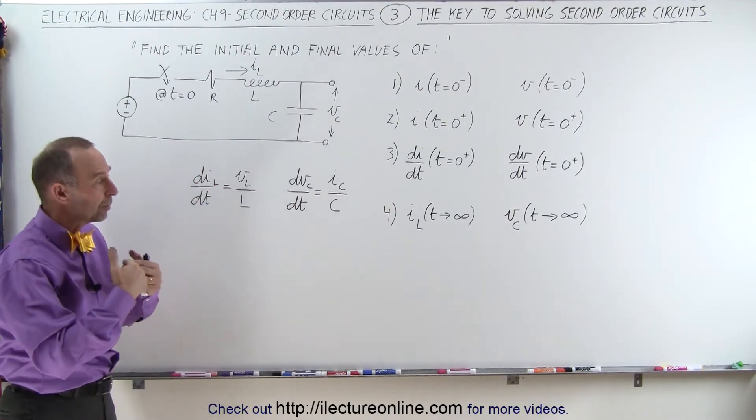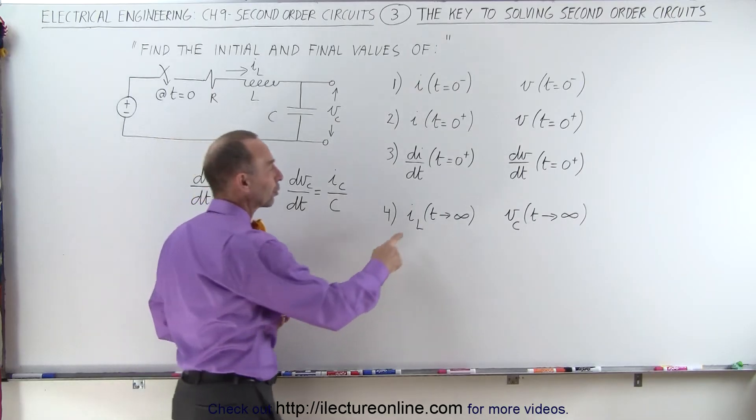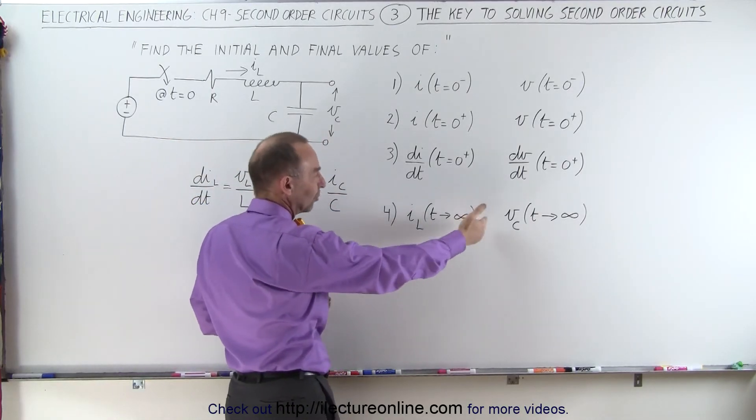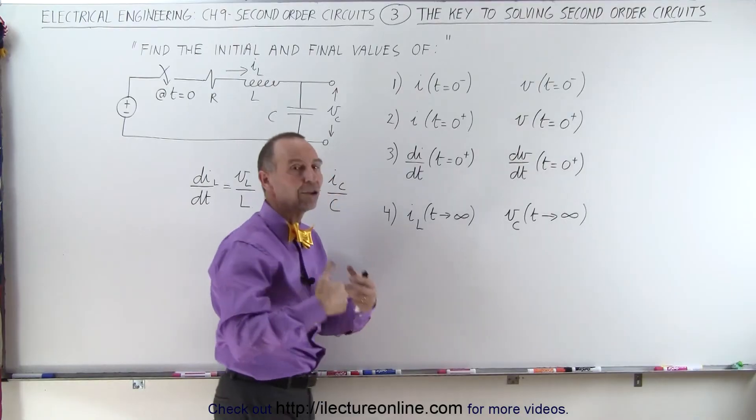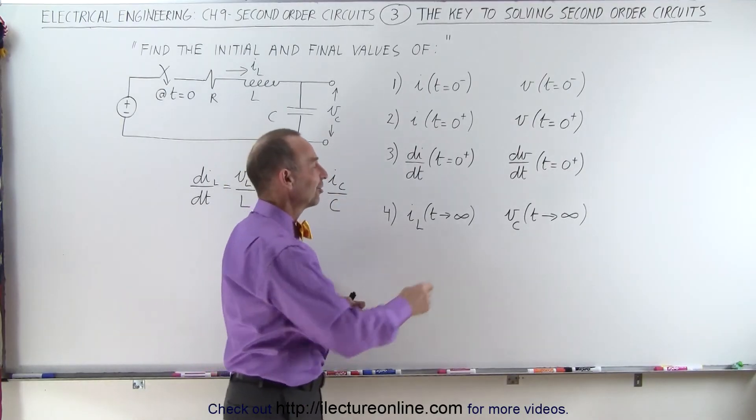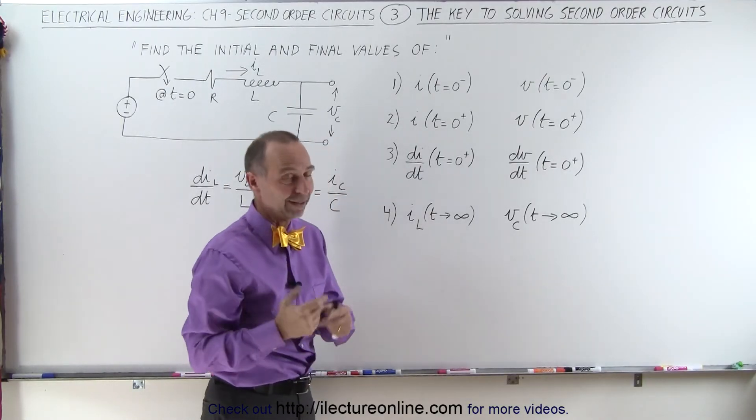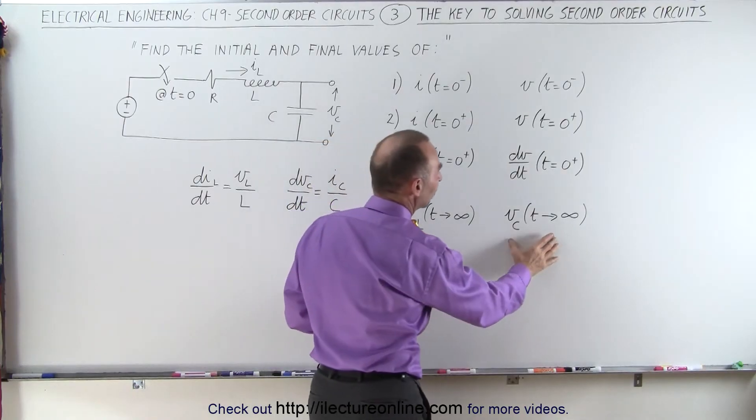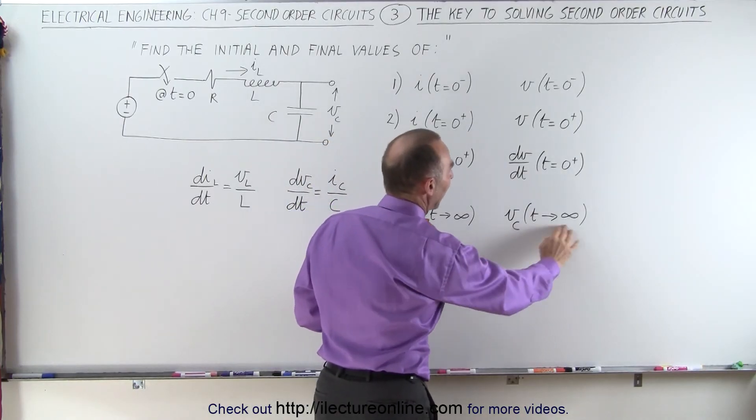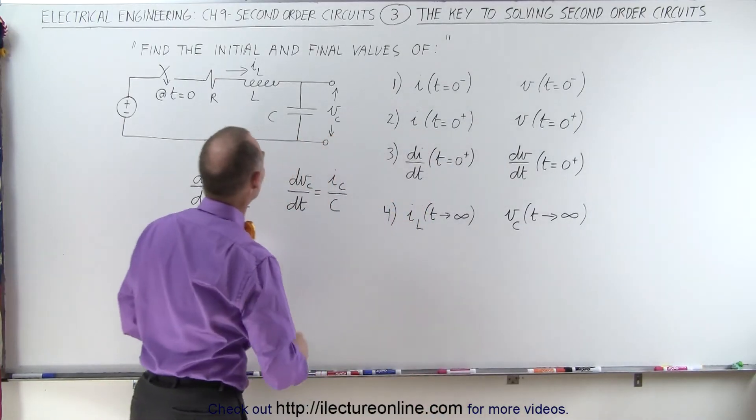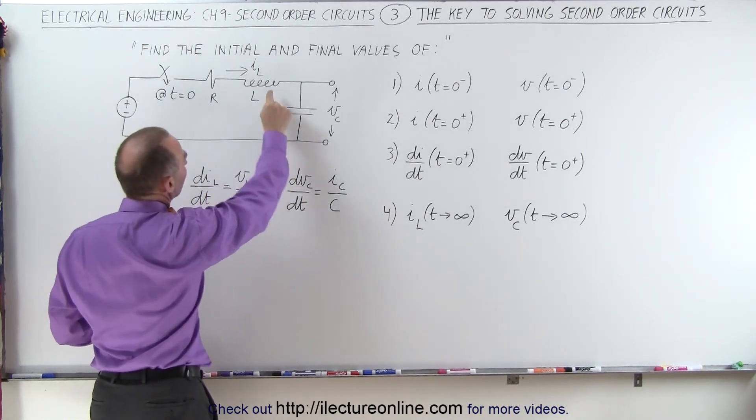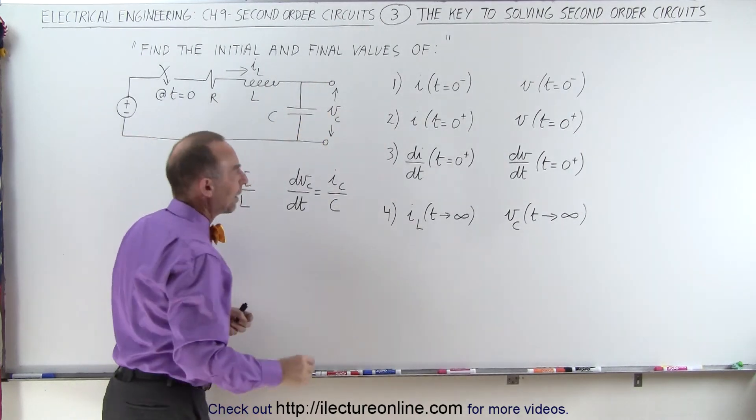Finally, once we reach steady state, we need to find the current through the inductor at time equals, well, when it approaches infinity, long enough for steady state to have been reached. Typically, that doesn't take an infinite amount of time, of course. And we want to establish the voltage across the capacitor after a lot of time has passed. So again, we're looking for the current through the inductor and the voltage across the capacitor.